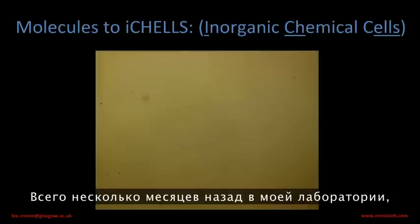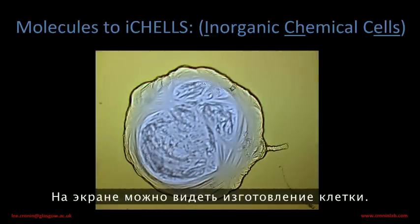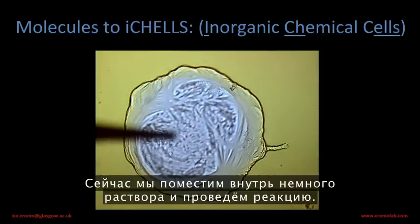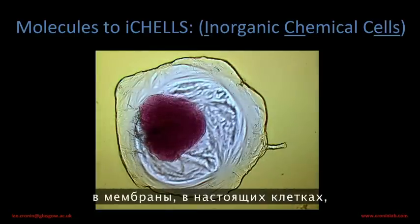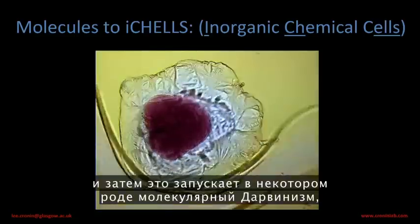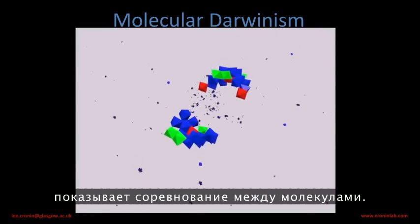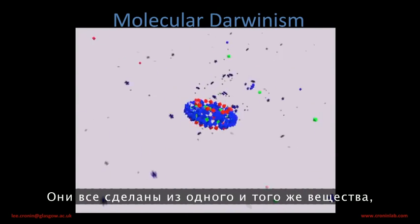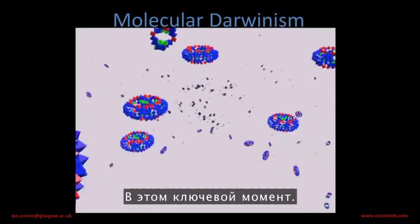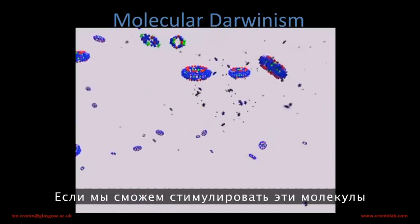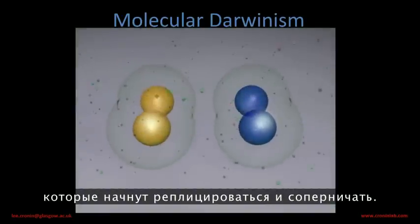With this Lego kit, we have the diversity required for complex information storage without DNA. But we need to make some containers. Just a few months ago in my lab, we were able to take these very same molecules and make cells with them. You can see on the screen a cell being made. We're now going to put some chemistry inside and do some chemistry in this cell. We can set up molecules in membranes in real cells, and then it sets up a kind of molecular Darwinism — a molecular survival of the fittest. This movie here shows this competition between molecules, competing for stuff, all made of the same stuff, but they want their shape to win, they want their shape to persist.